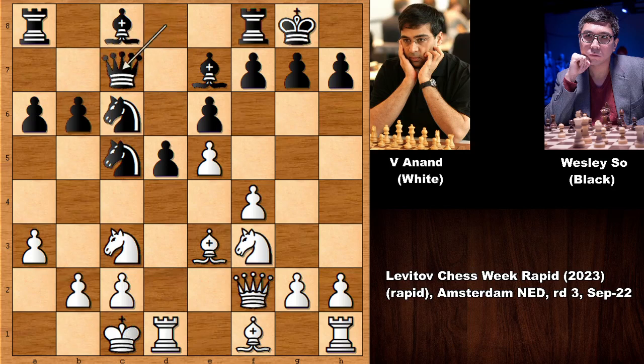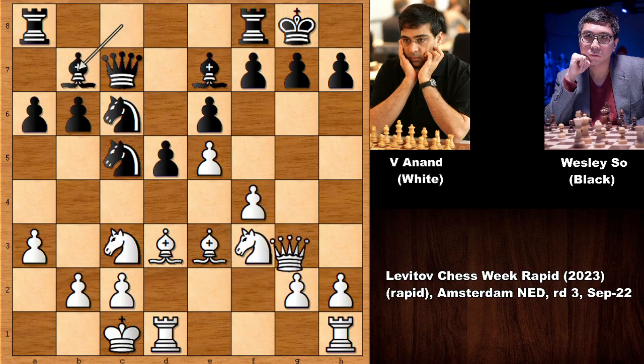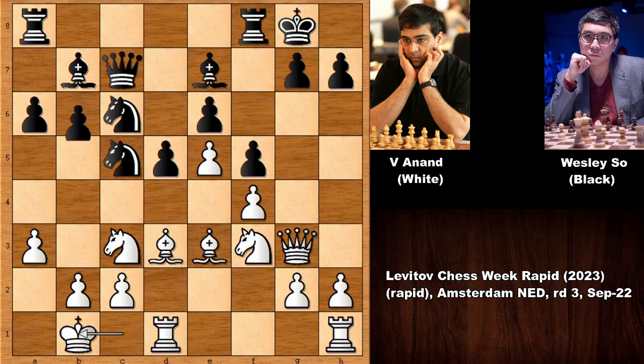Queen to c7, bishop to d3, bishop to b7, queen to g3 — lining the queen with the king — and we have f5, king to b1, b5. It is very simple: black is charging from the queenside and Anand is charging from the kingside. The real question is who is going to be faster.